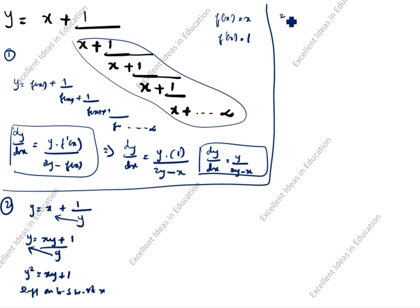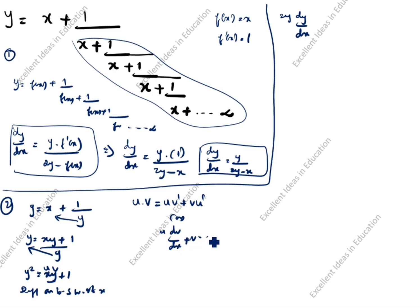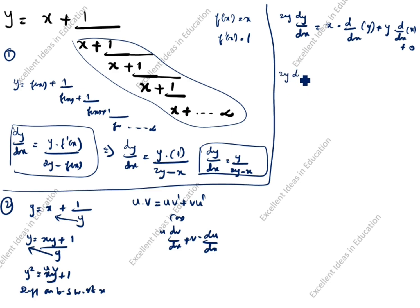On the right side, xy is a product with u = x and v = y. Applying the product rule: x·dy/dx + y·(dx/dx) = x·dy/dx + y. So 2y·dy/dx = x·dy/dx + y.